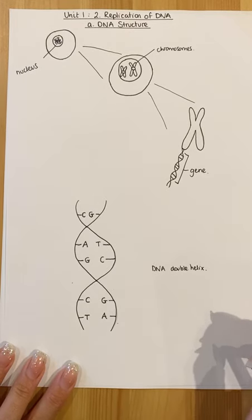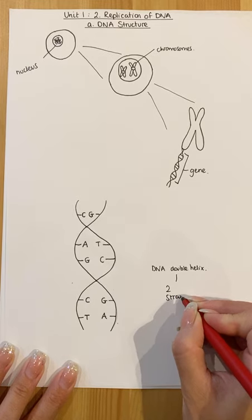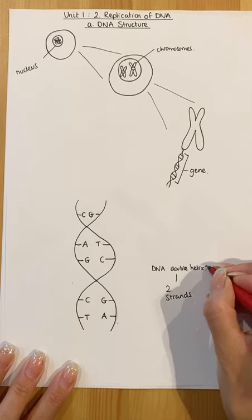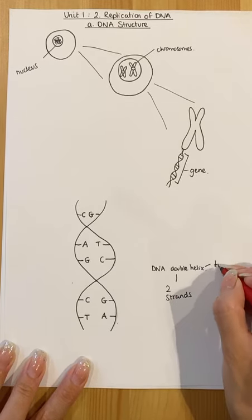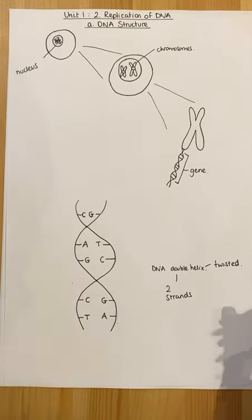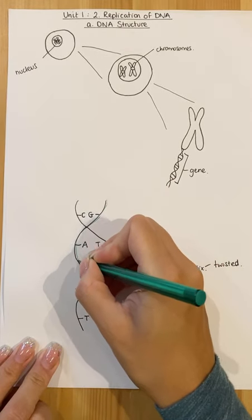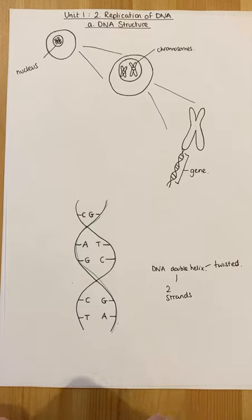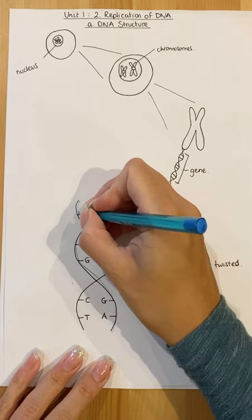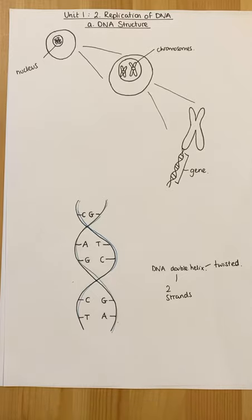The double comes from the fact that it is double-stranded, so there are two strands. The helix comes from the fact that it is twisted. So this is one strand that flows down here, and then the other strand flows on the other side, along this way. That shows the molecule has been twisted.